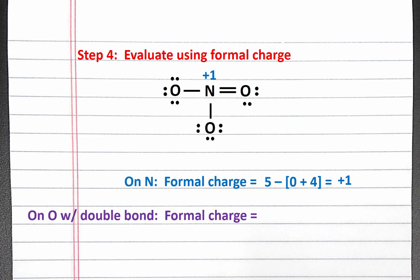Next, we'll calculate the formal charge for the oxygen on the right with a double bond. A neutral oxygen atom has six valence electrons. There are four lone pair electrons on this oxygen and there are two bonds. So we have six, subtract four, and two. The formal charge on this oxygen is zero.